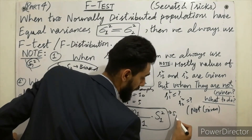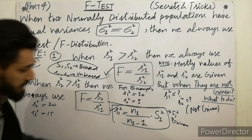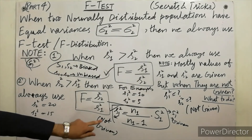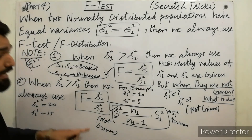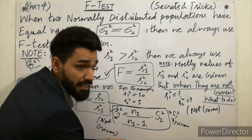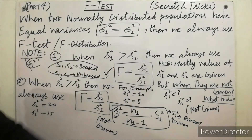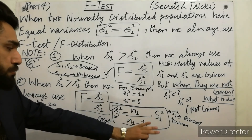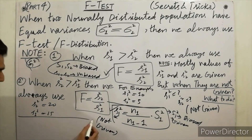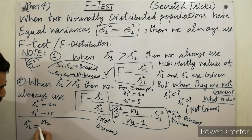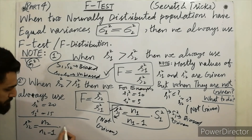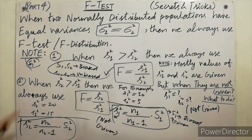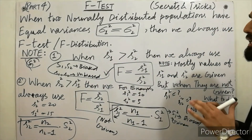If you face any problem where small s1 squared is not given but capital S1 squared (biased) is given, always use the formula: s1 squared = (N1 / (N1 minus 1)) × S1 squared. Similarly, s2 squared = (N2 / (N2 minus 1)) × capital S2 squared. Use these two formulas to calculate the values needed for the F-test.